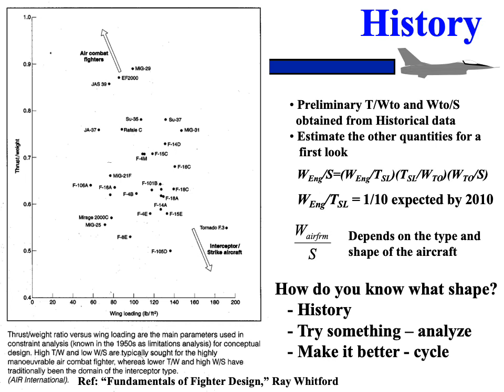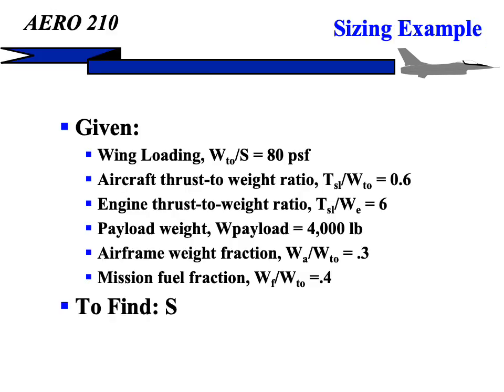Another term in the equation is the airframe wing loading portion. Experts in that area would tell you that it depends a lot on the shape of the aircraft. So how do you know what shape? You're going to have to draw something — you're going to have to start somewhere. One way to start is to look at history and say this airplane is going to be a fighter type, so look at similar airplanes and shape your design initially like that. Make a start, then do some analysis, then make changes to make it better. That's how we approach aircraft.